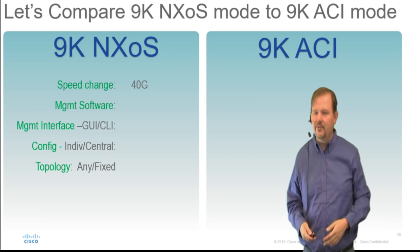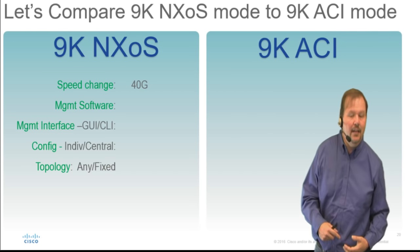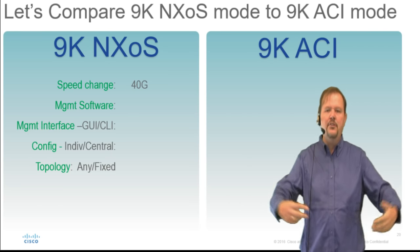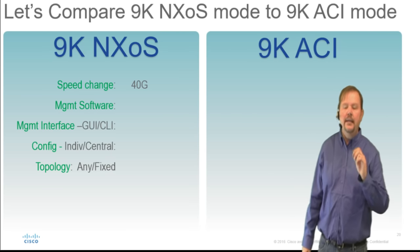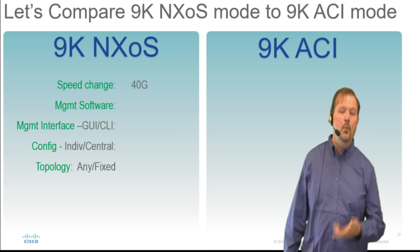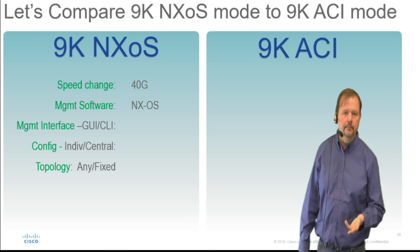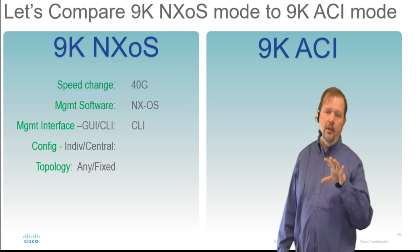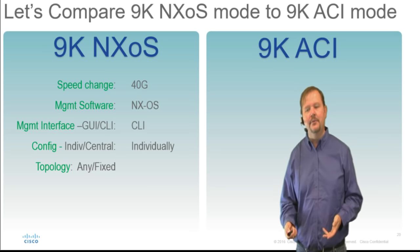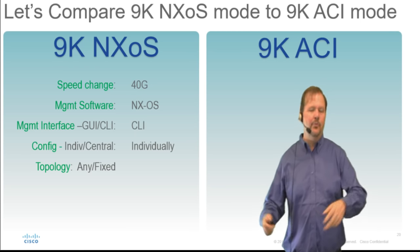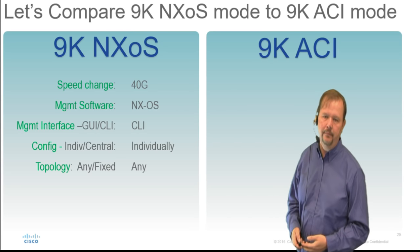Some customers are still at 1 gig, but now they have a choice — they can do 10 gig or 40 gig, and 40 gig only costs a little more. Kind of like when you go into 7-Eleven: for 99 cents you get a 32-ounce soda, but for $1.19 you can walk out with a vat of soda. Management for the 9K in NXOS mode is of course NXOS, via command line. Just like before, we configure box by box — individually. And I can build triangles, squares, any shape — any topology I want.